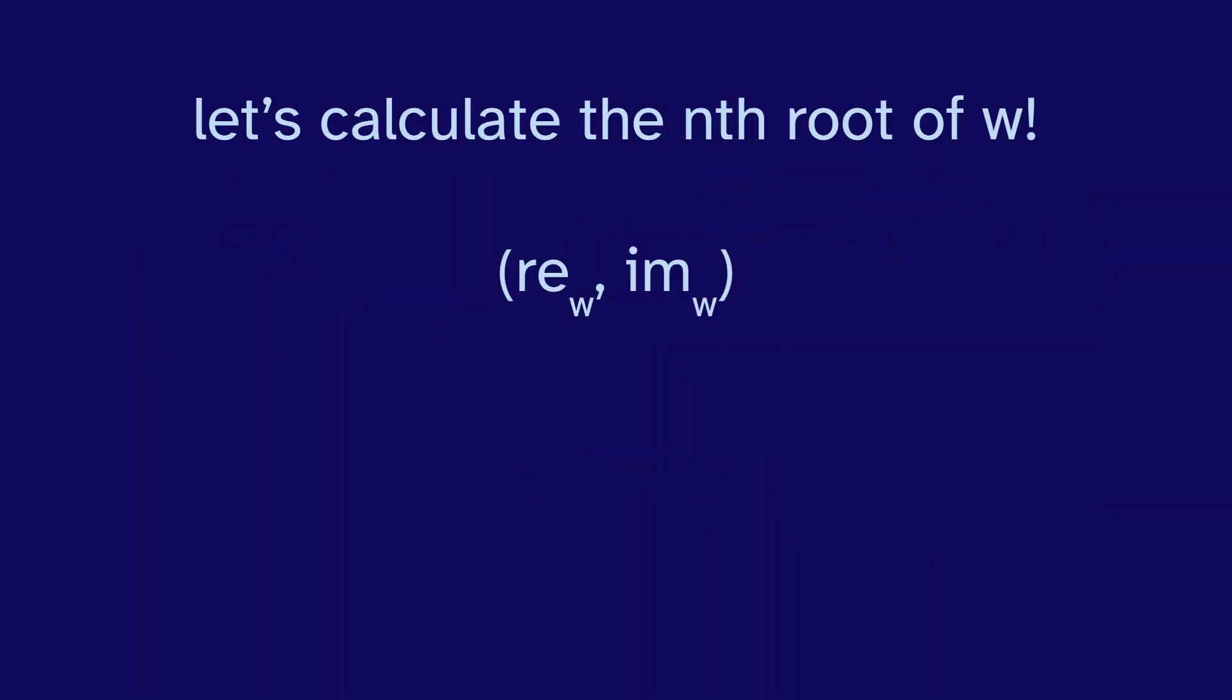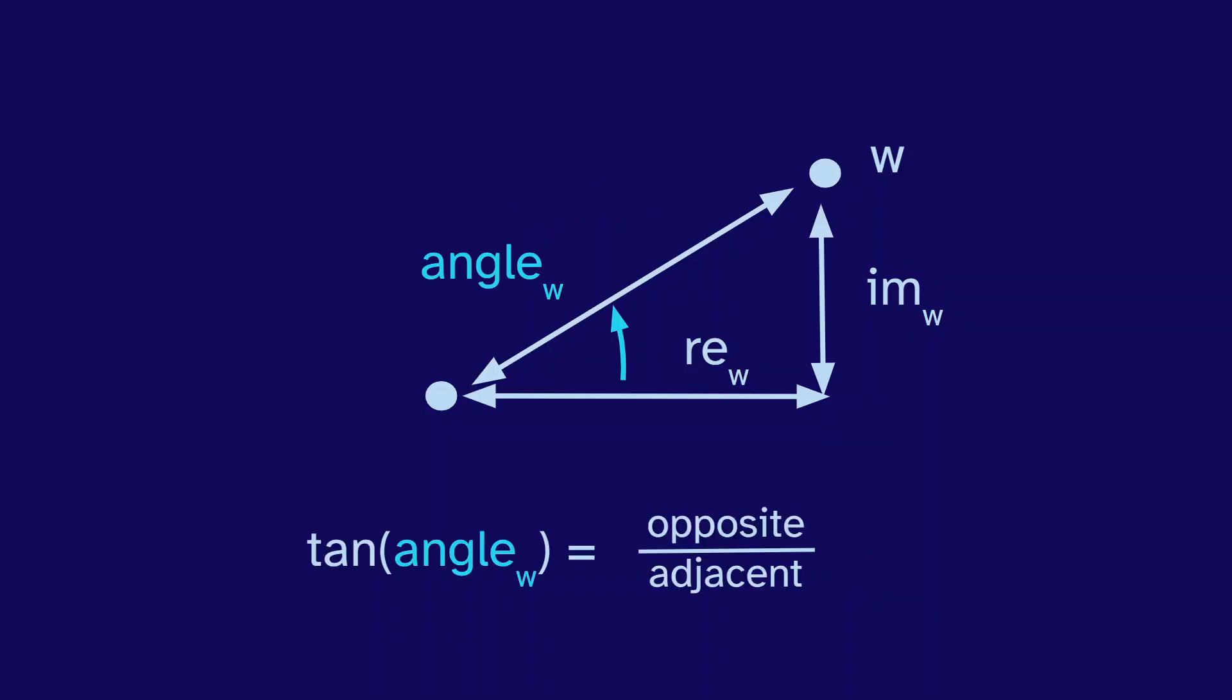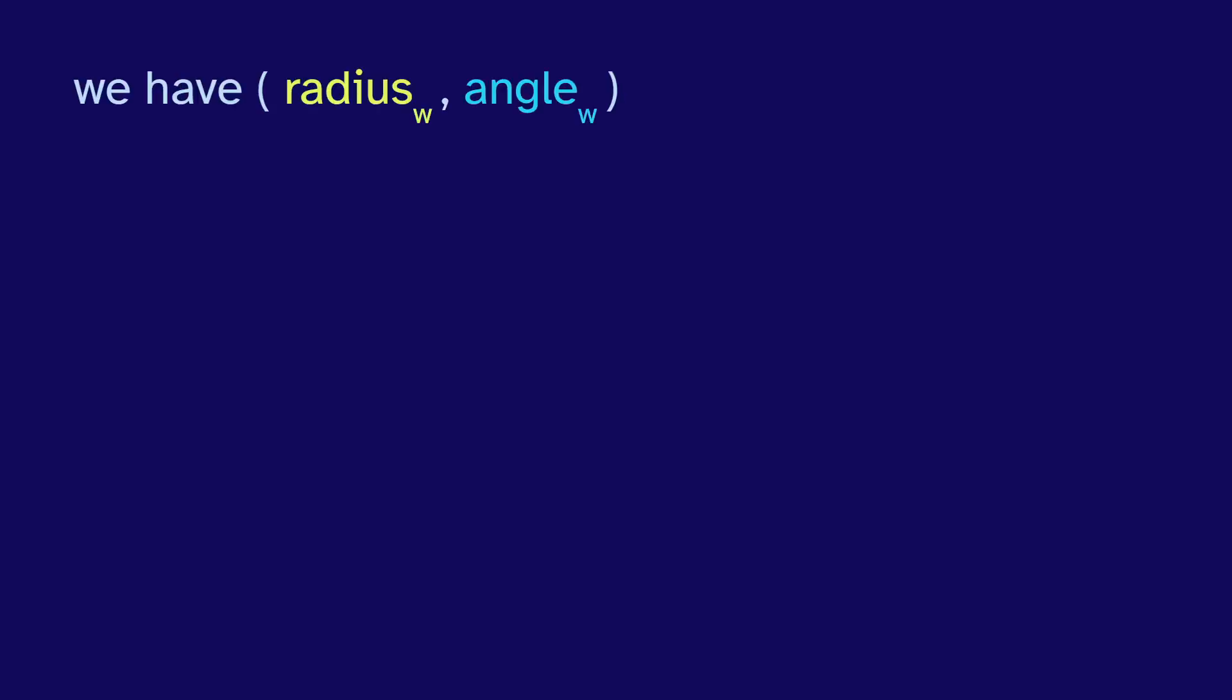Let's say we have the number w, and we have it in the real and imaginary coordinates. But it's a lot easier to work with roots in the polar coordinates. So we'll want to convert them. We'll want to find the radius and angle of w. Let's start with the radius. That's the distance from w to the origin. We have the horizontal real distance and the vertical imaginary distance. So we can just use the Pythagorean theorem to get the radius. What about the angle? Well, the tangent of the angle is opposite over adjacent, or imaginary over real. So we can just take the inverse tangent of imaginary over real to get the angle.